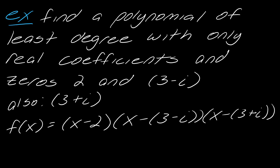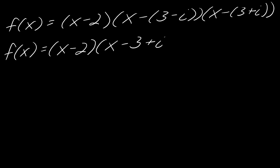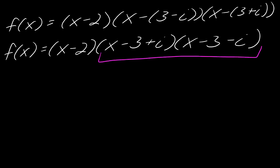Technically that factored form would suffice as the polynomial of least degree, but many homework systems will want you to multiply it all out. So let's multiply everything together. First, distribute the negative signs through each factor.